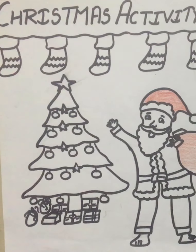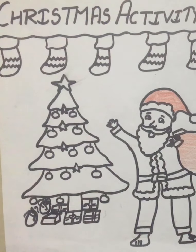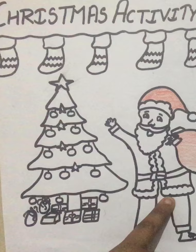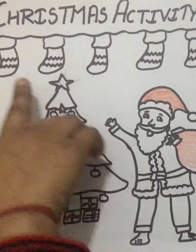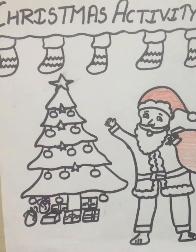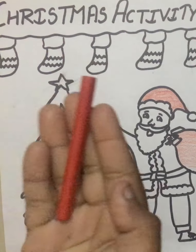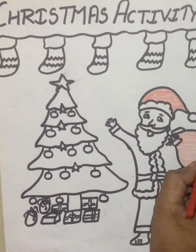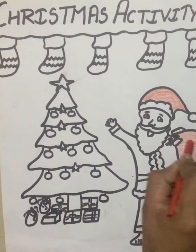Good morning to all of you, welcome to online classes. Today we will start a Christmas Day activity. First of all, take out a plain white paper sheet and make a Christmas tree in the center, also make socks like this. Use red crayons to color the center clothes, cap, and gifts.